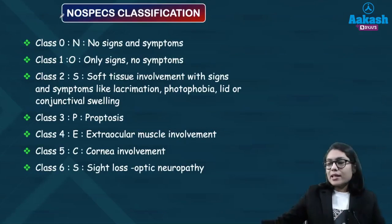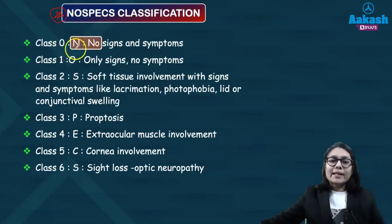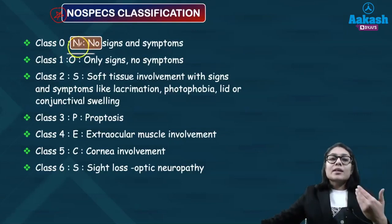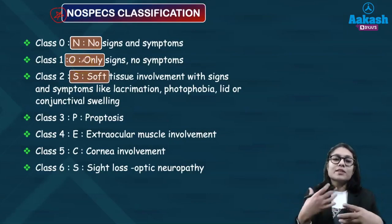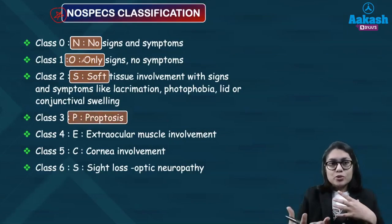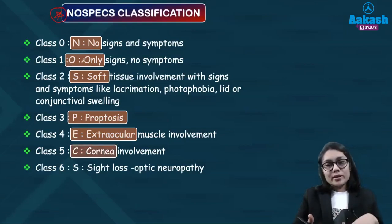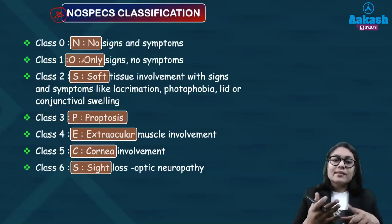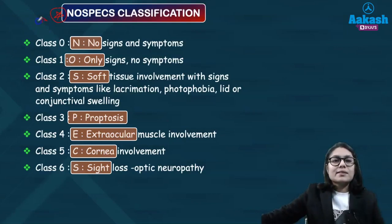Thyroid eye disease is classified using the NO SPECS classification, a mnemonic indicating severity of involvement. N = no signs and symptoms; O = only signs but no symptoms; S = soft tissue involvement with symptoms like watering, photophobia, lid and conjunctival swelling; P = proptosis; E = extraocular muscle involvement; C = corneal involvement as exposure keratopathy; and the last S = sight loss from compressive optic neuropathy. This classification is very important.